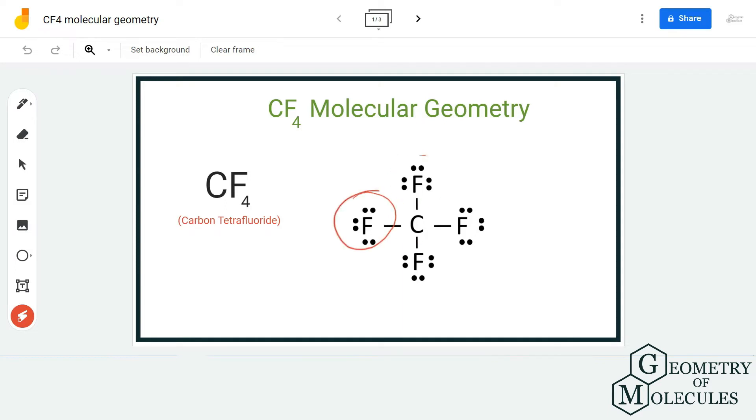Here all the atoms have complete octets, so it is very important to check all these things before determining the molecular geometry because the lone pairs and the number of atoms forming bonds with the central atom are important when it comes to determining the molecular geometry.